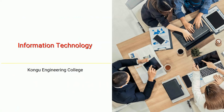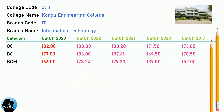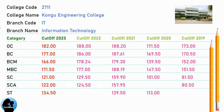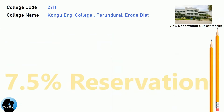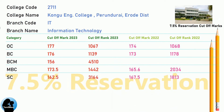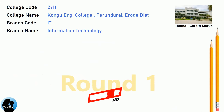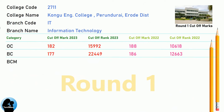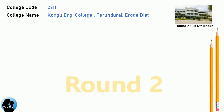BNA Cut-Off for Kongu Engineering College in Information Technology. BNA 7.5 Reservation Cut-Off for Kongu Engineering College in Information Technology. BNA Round 1 Cut-Off for Kongu Engineering College in Information Technology. BNA Round 2 Cut-Off for Kongu Engineering College in Information Technology.